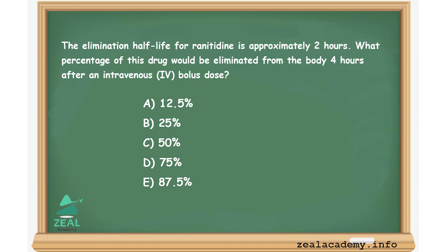The elimination half-life for ranitidine is approximately two hours. What percentage of this drug would be eliminated from the body four hours after an intravenous bolus dose? Option A: 12.5%, Option B: 25%, Option C: 50%, Option D: 75%, Option E: 87.5%.